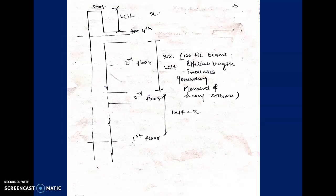This is illustrated here: for the first floor up to the fourth floor, we have the beam, so Le is x. Between the fourth floor and second floor, at the third floor there is no beam, so the effective length is 2x. Again between the second floor and the first floor, the beam is there, so effective length becomes x.